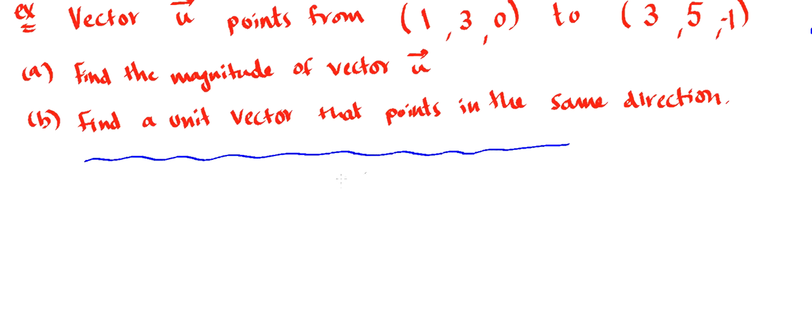Now before I start solving this question, I just want to remind you that we represent points in a different way than when we represent vectors. So if I want to represent a point, I use these brackets. If I want to represent a vector, I use these sharper brackets.